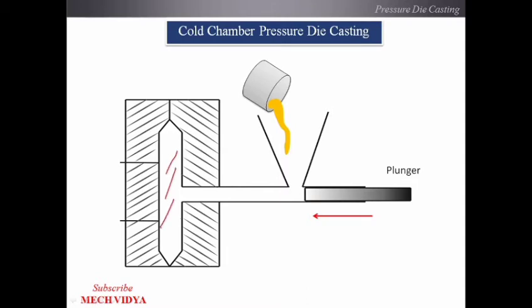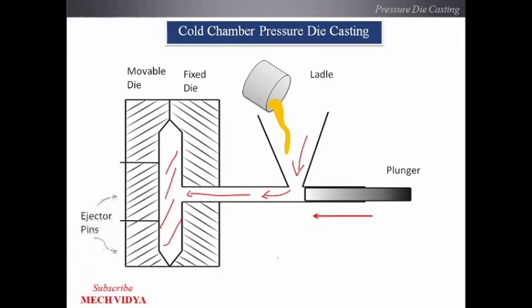First, we have a plunger which forces the molten metal into the die cavity. We pour molten metal in this direction, it comes here, and then the plunger forces it into the die cavity. We also have a ladle, a movable part of the die, and a fixed part of the die. The movable die is clamped to the fixed die with the help of ejector pins. After casting is complete, we remove the ejector pins and move the movable die to the left to retrieve the final casting.